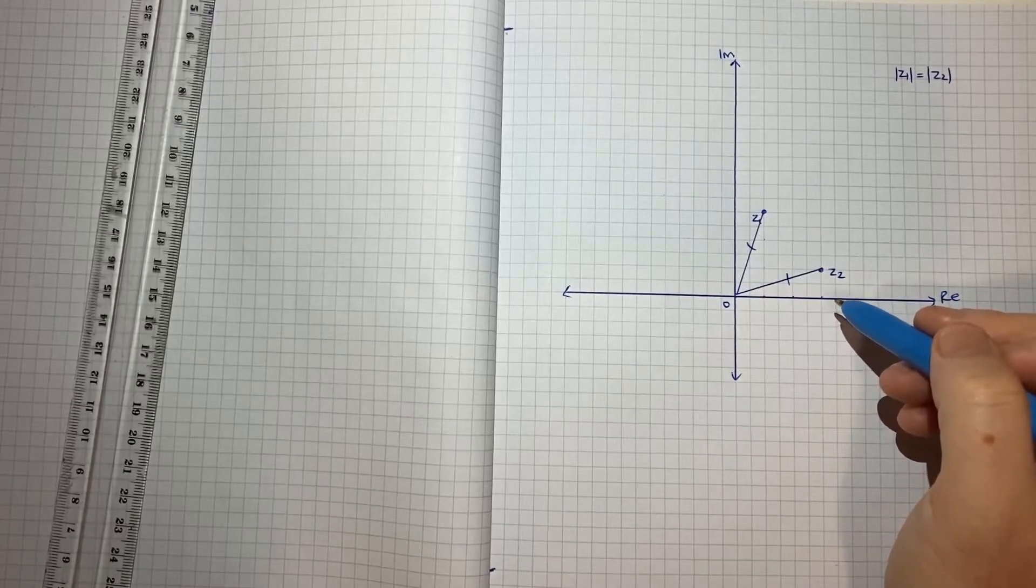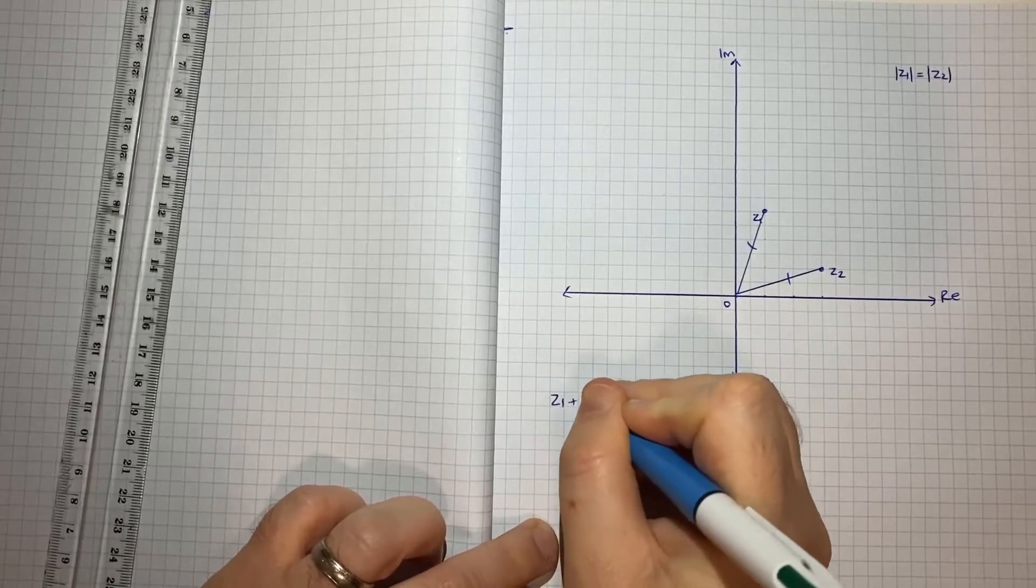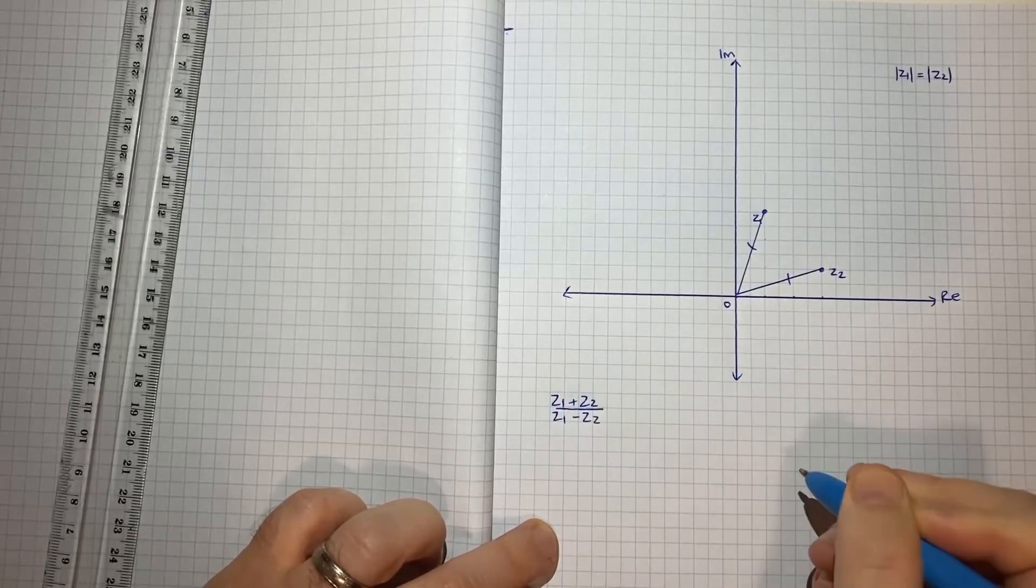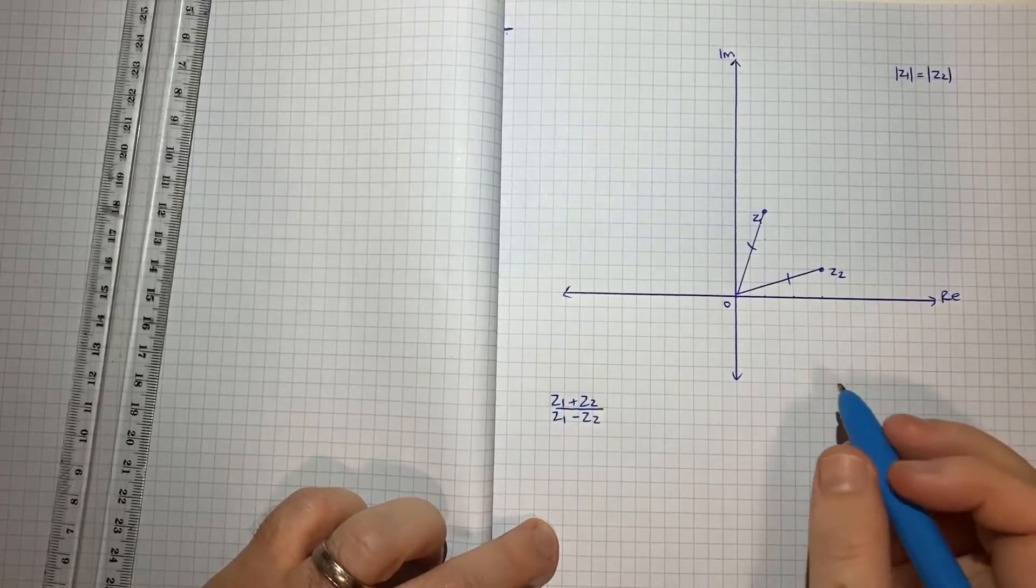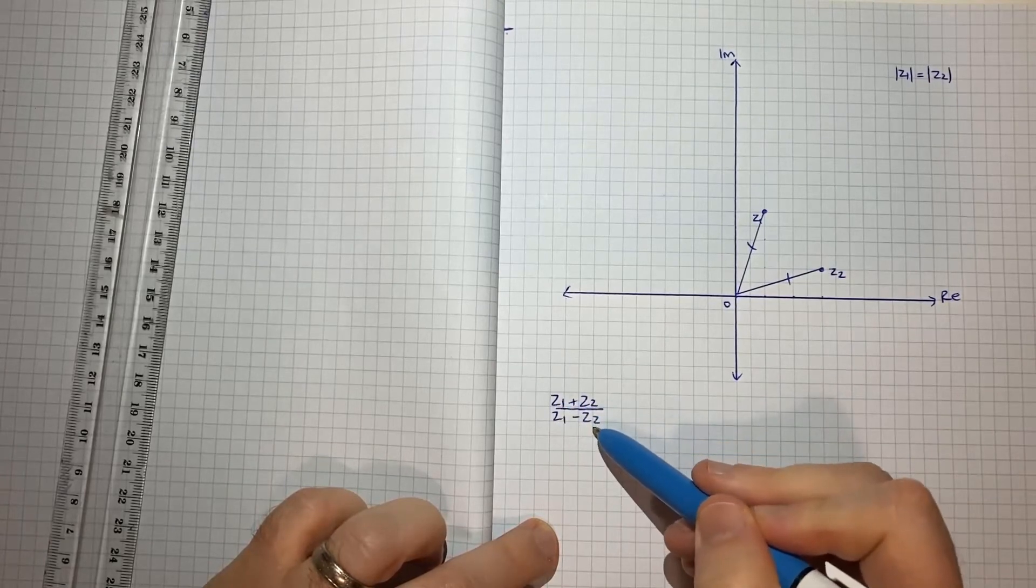Now what we're trying to show relates to z1 plus z2 on z1 minus z2. We're trying to show that that is purely imaginary. So I think it will help to draw each of z1 plus z2 and z1 minus z2.